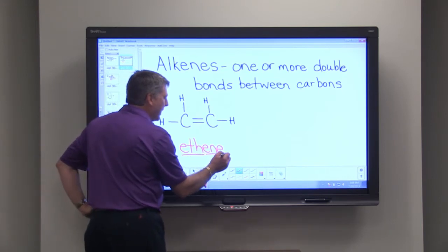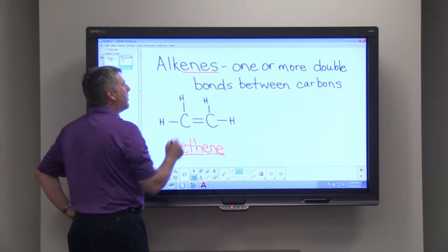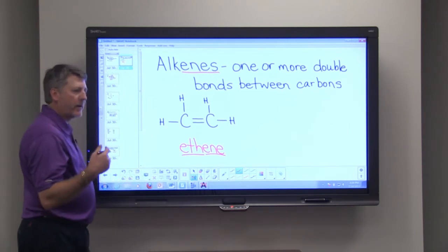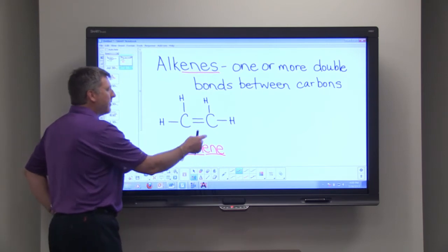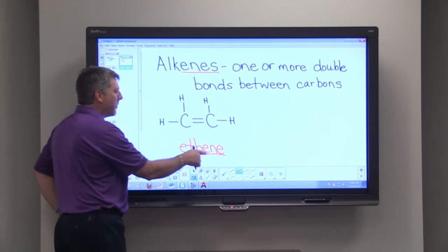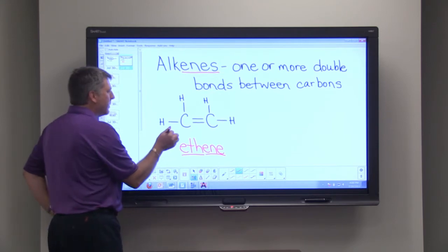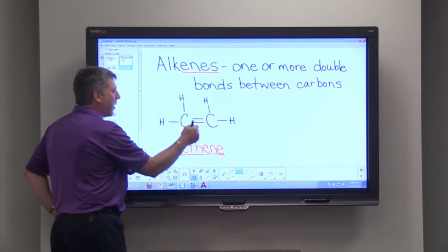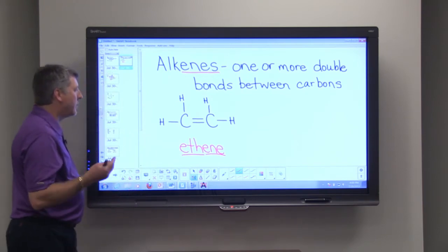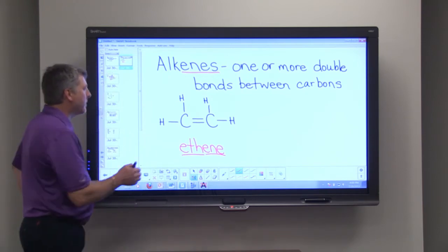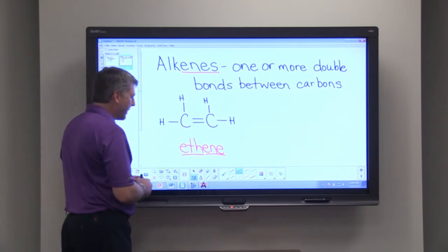And then the suffix -ene recognizes that we have that double bond. Just like members of a family may share a last name in common, members of this family of organic compounds share the suffix -ene in common. And so if we look at our two carbons, you can see that we have a double bond, two shared pairs of electrons between carbon-1 and carbon-2.